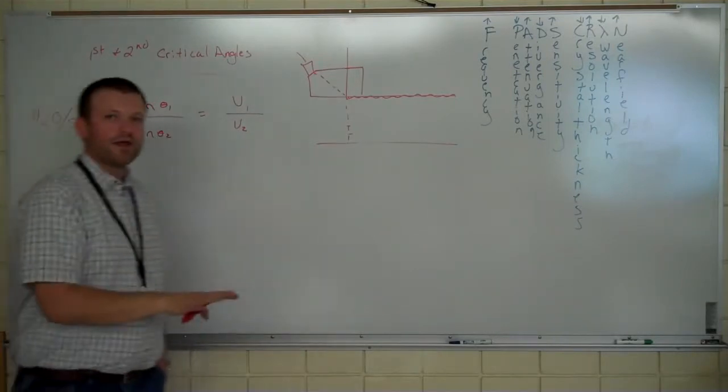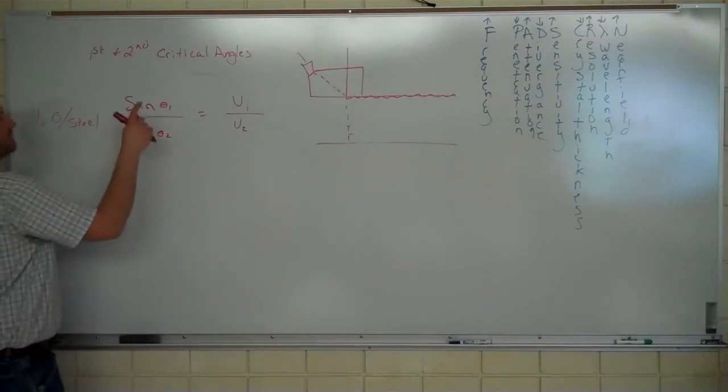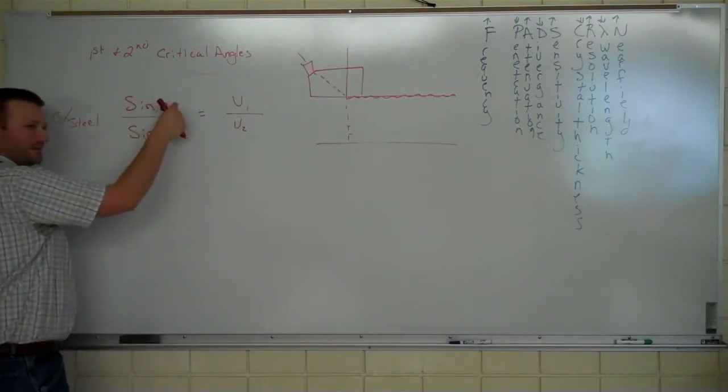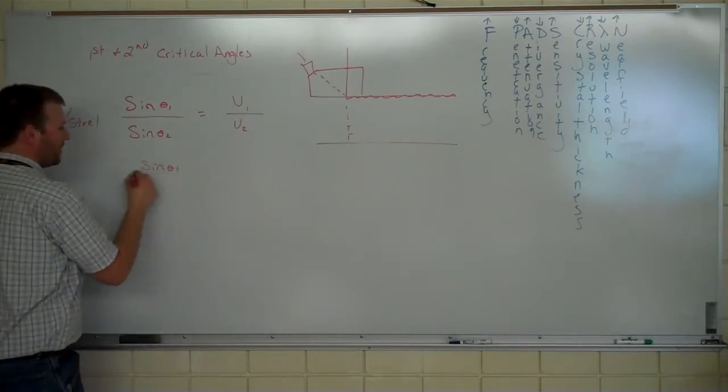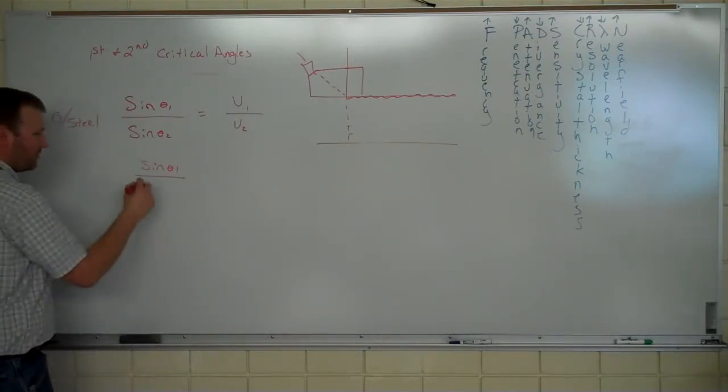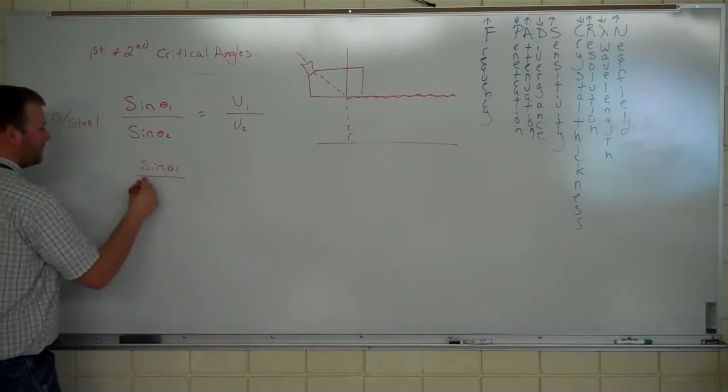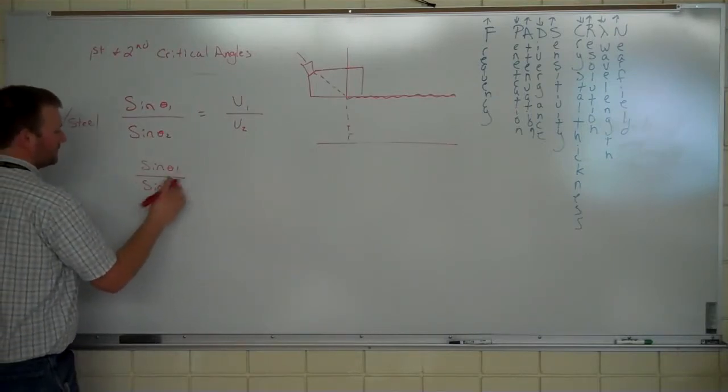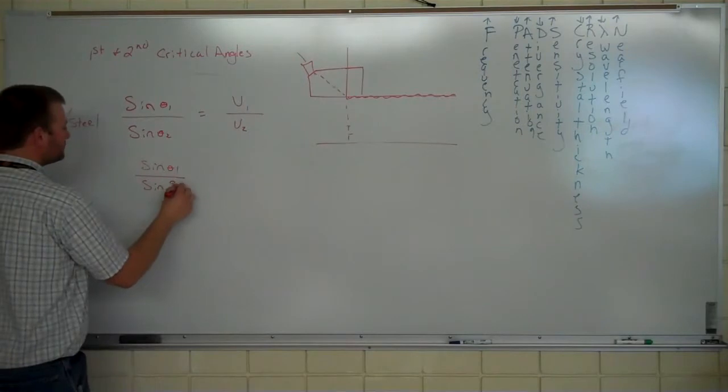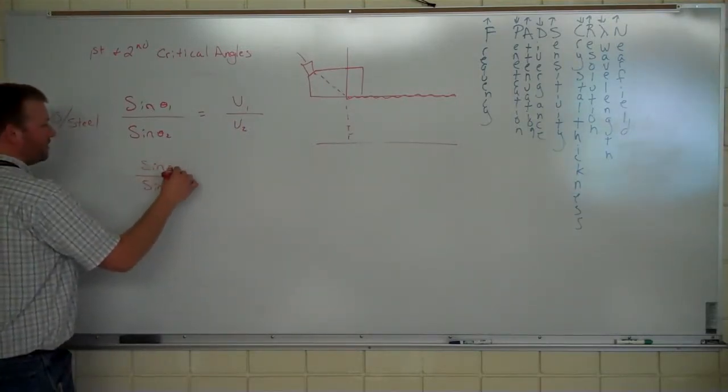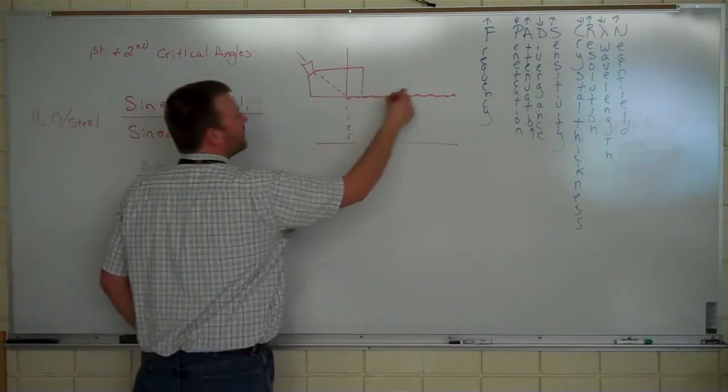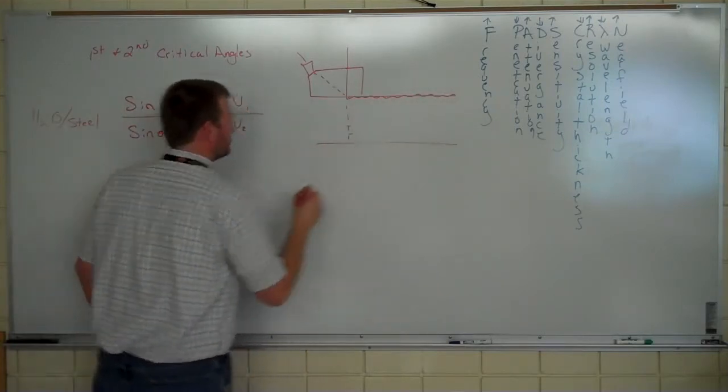So we already have three pieces of the puzzle like we already did before, except this time we need to know what this angle is. Meaning, we don't know the sine of angle one, because we know, or that we know, I should say, we already know. We know that the longitudinal wave is going to be refracted out or reflected out to 90 degrees, right? So here's our sine of angle one. We don't know what that is, but we already know that this is 90 degrees over here.